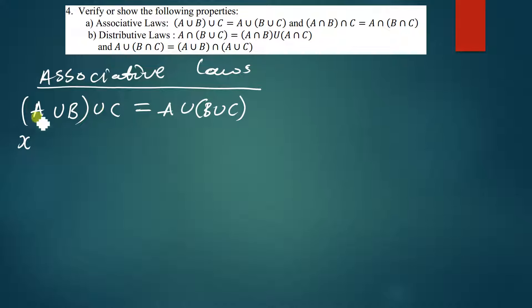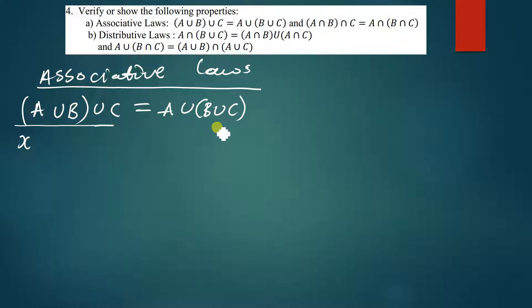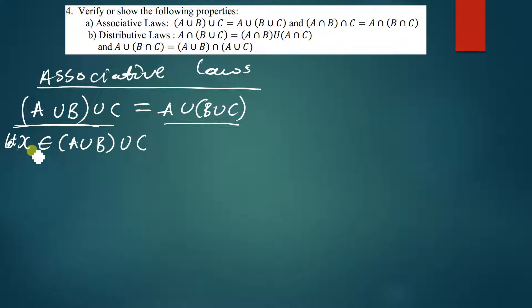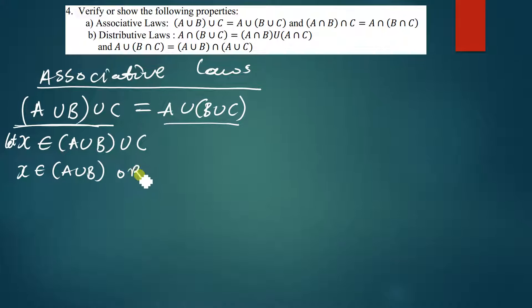When they ask you a question like this, they are trying to ask you to prove that the solution of the left hand side is a proper subset of the solution of the right hand side. And since there's an equal sign, you also prove the reverse. So let x be a member of A union (B union C).